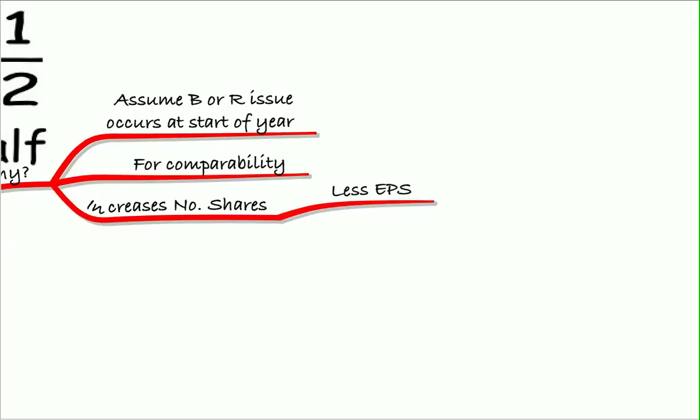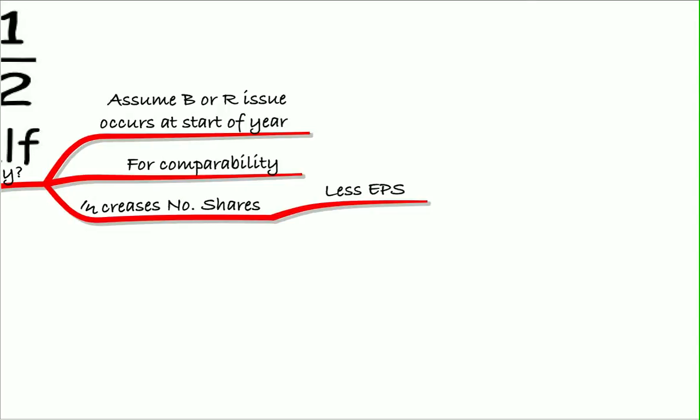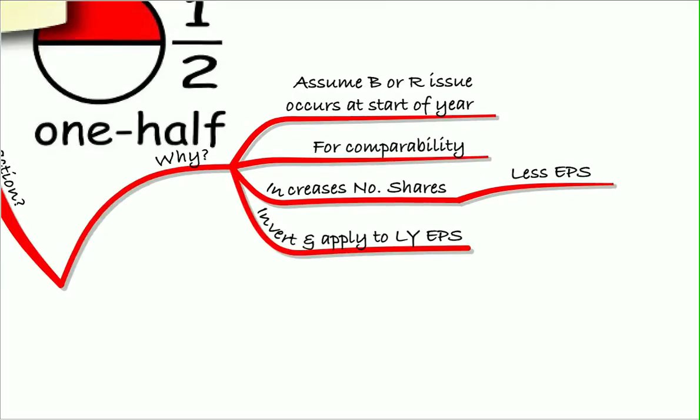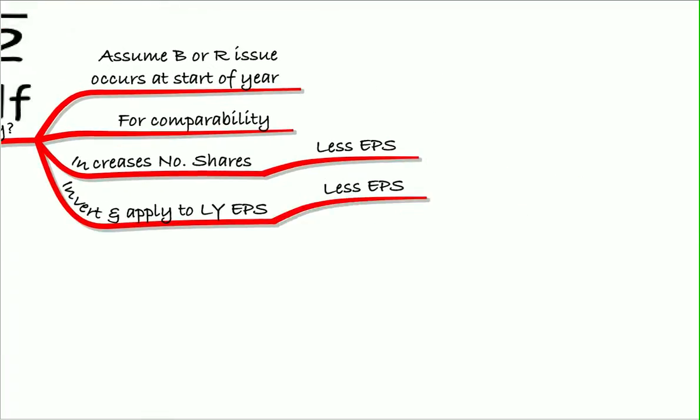It increases the number of shares so that there's less earnings per share this year, and also then we invert it and apply it to last year's earnings per share so there's less earnings per share last year. That makes the two comparable. So we're really pretending that the bonus or rights issue happened earlier than it did for comparability.